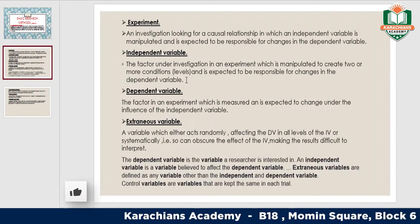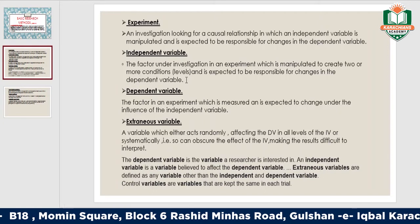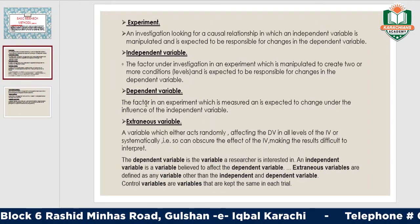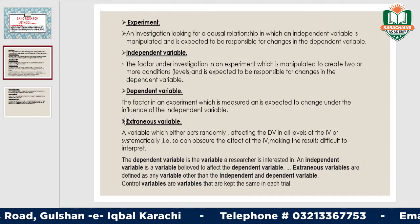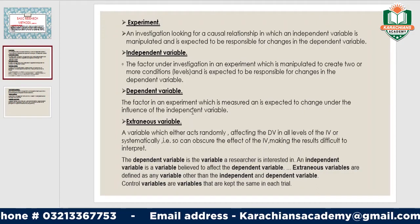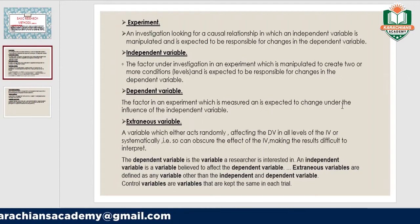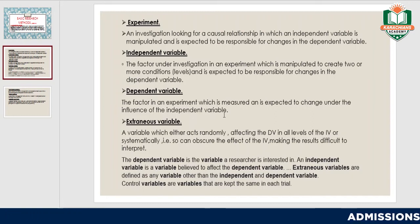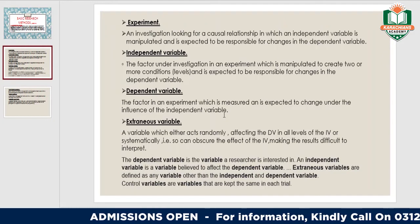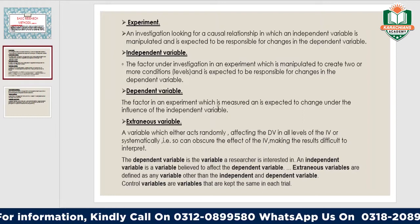The dependent variable is the other key variable. These are the lists that the subject has to remember. The list will be the independent variable — whether 6, 8, 10, or 15 words. When we apply it to the subject, the response will be the dependent variable. The dependent variable is the factor in an experiment which is measured and is expected to change under the influence of the independent variable.